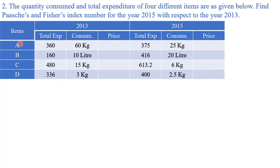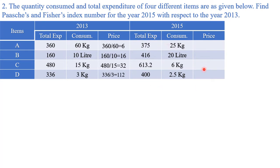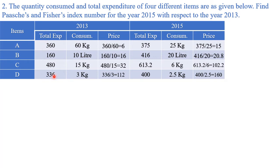We have to calculate Paasche's and Fisher's index numbers. Items A, B, C, D are there with total expenditure and consumption for base and current years. The two extra columns I have added myself. What we need to do is divide total expenditure by consumption: 360 upon 66, similarly for the other items. For the current year, again divide total expenditure by quantity to get prices.